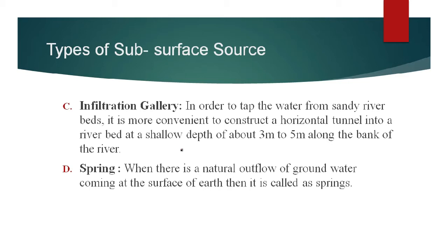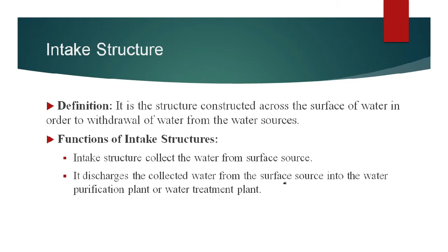These galleries are constructed to store underground water. The next type of subsurface source is springs. When there is a natural outflow of groundwater coming at the surface of earth, it is called as springs. When the groundwater table is high, water comes to the ground in the form of springs. These are all the types of subsurface source.